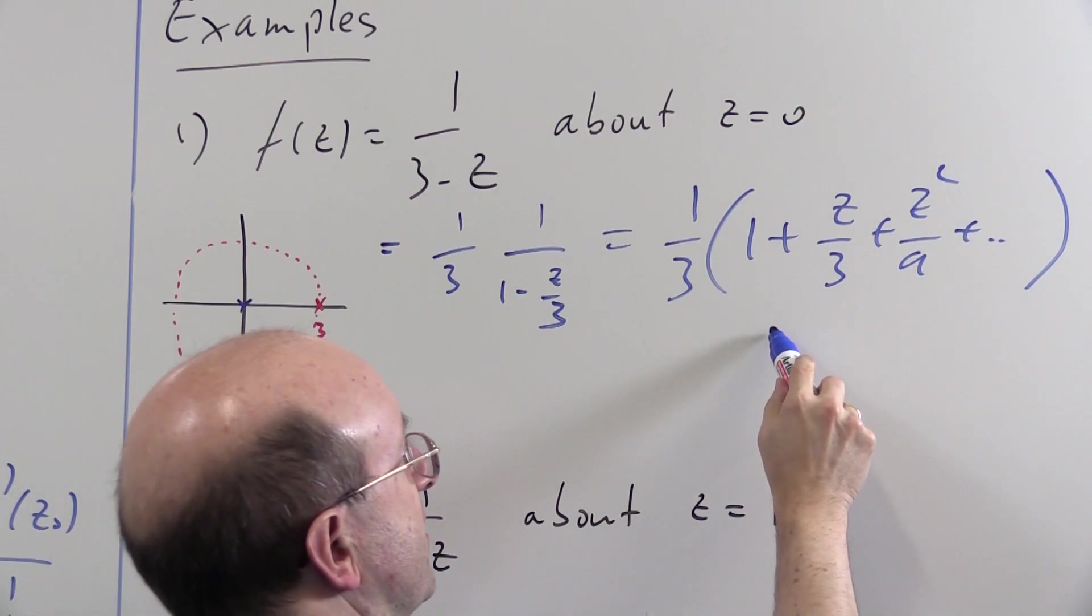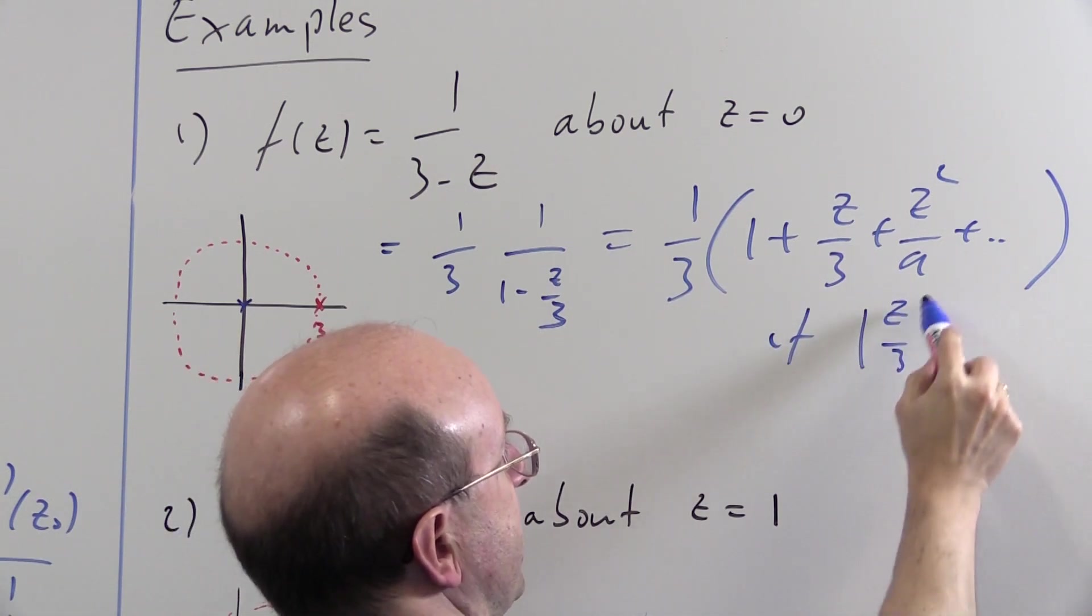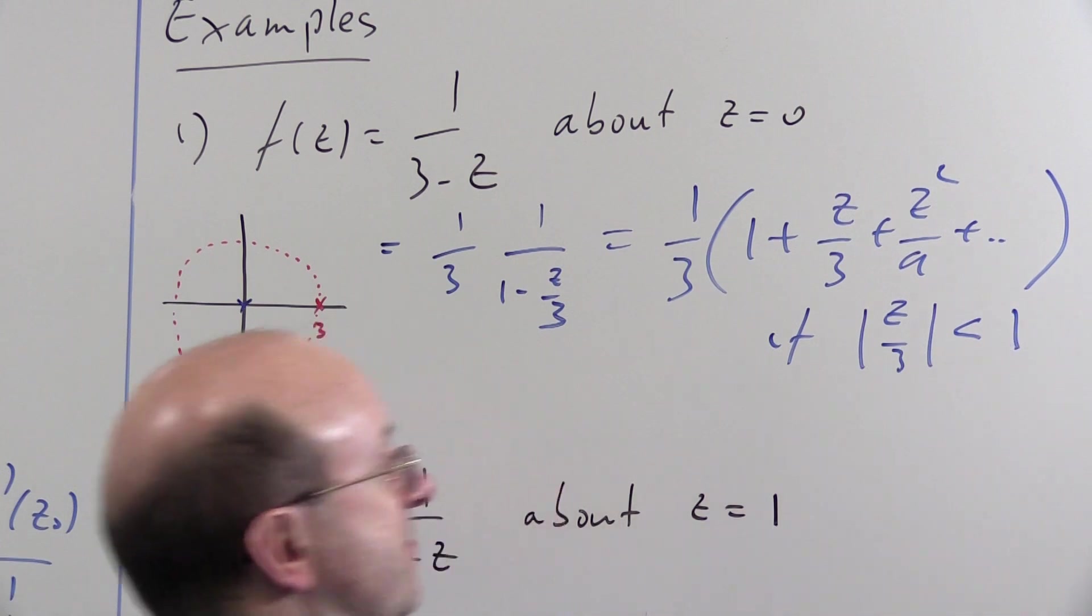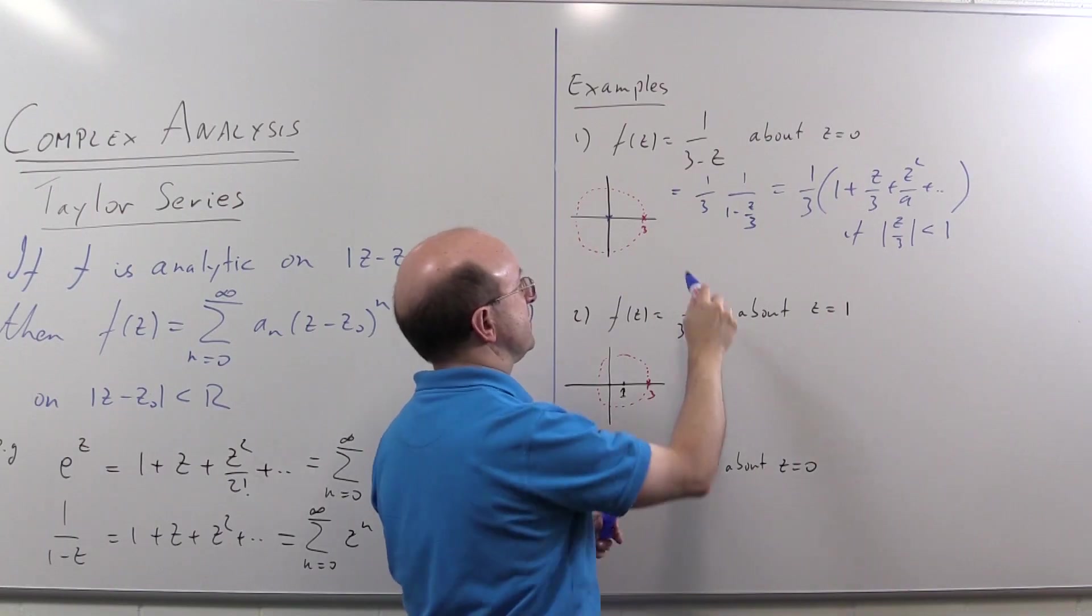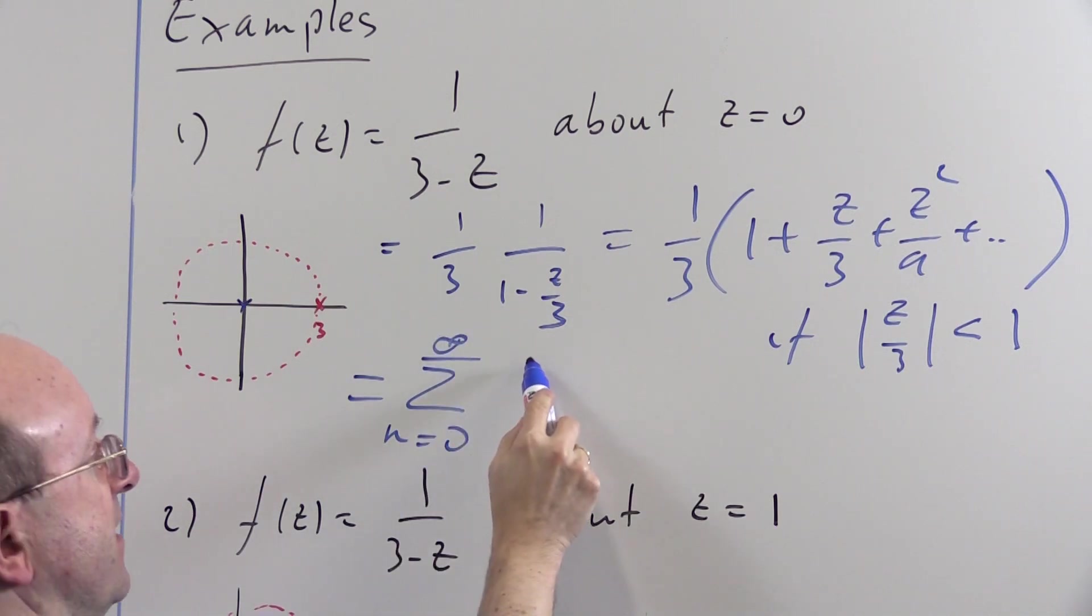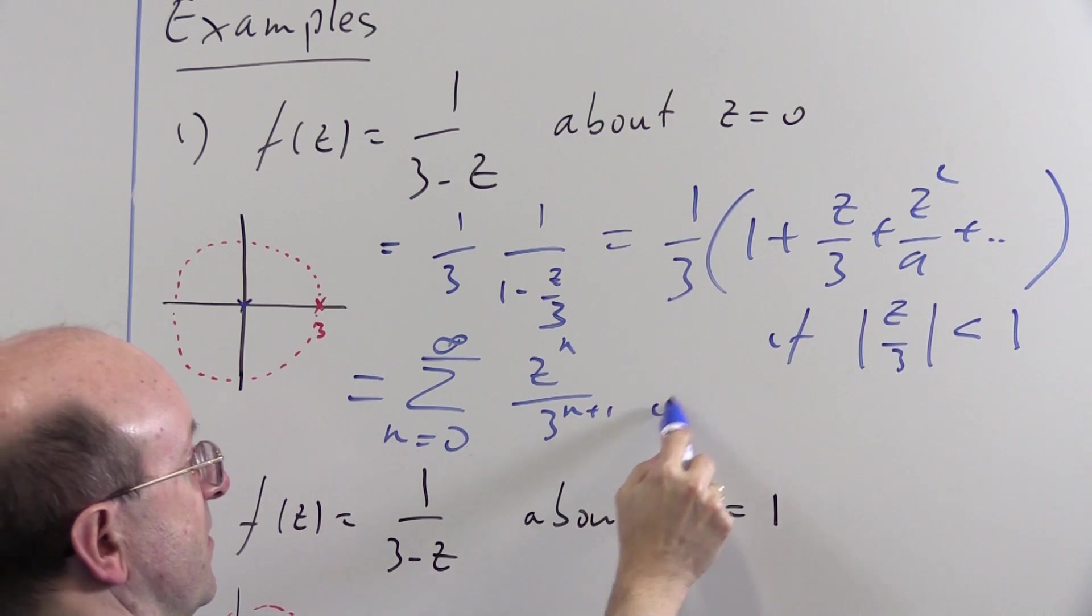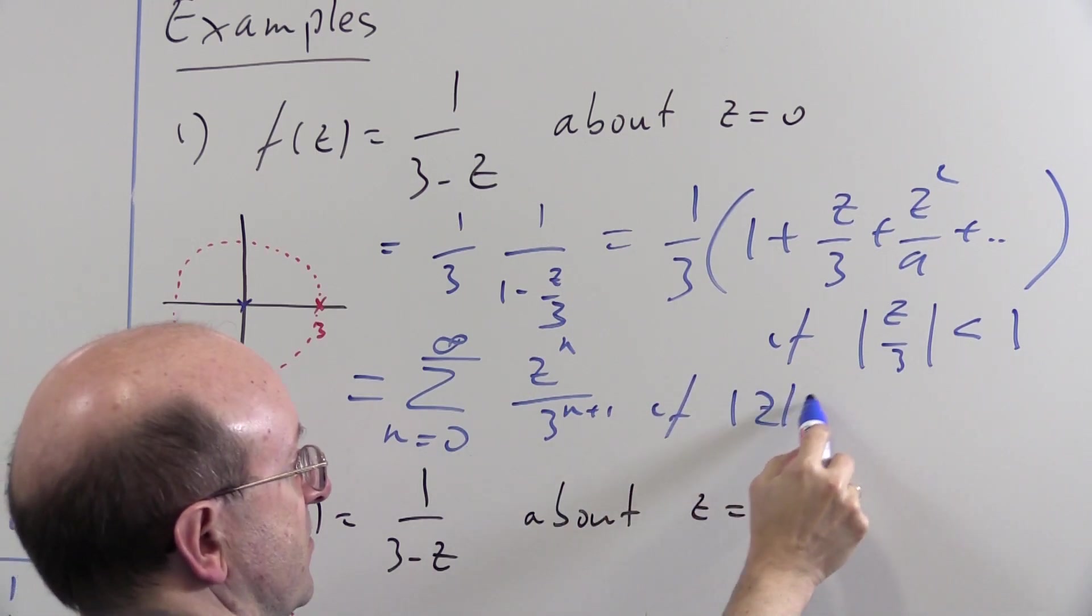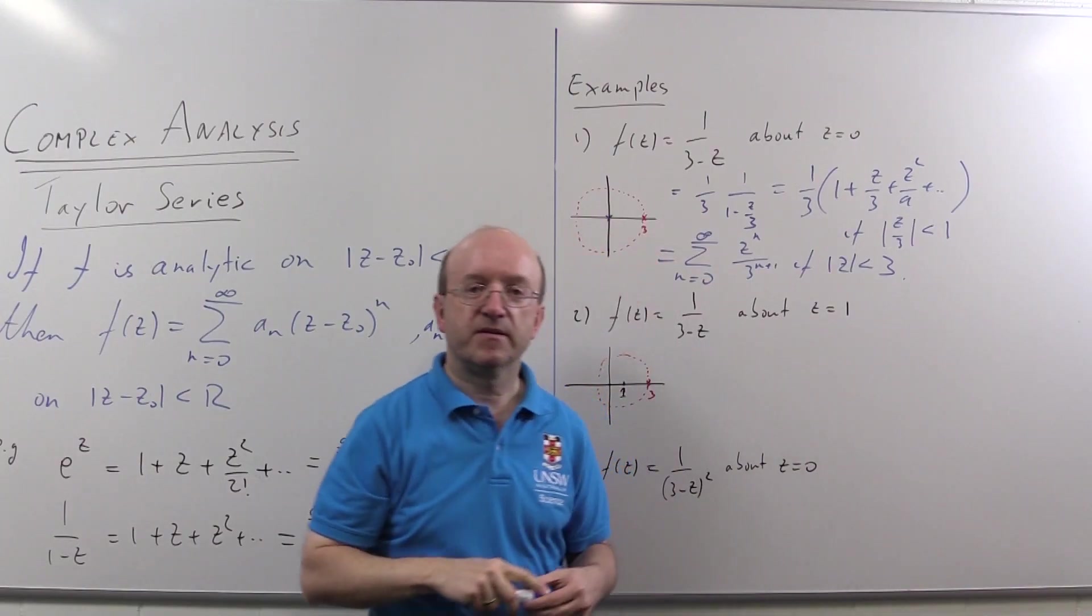Always ask yourself where a series converges when you write it down. And this thing is going to work if, in fact if and only if, mod z over three is strictly less than one. Now you could leave it there if you like, or you can tidy it up into sigmas. This is the sum from n equals zero to infinity: z to the n over three to the n plus one, if mod z less than three. And that's that one.